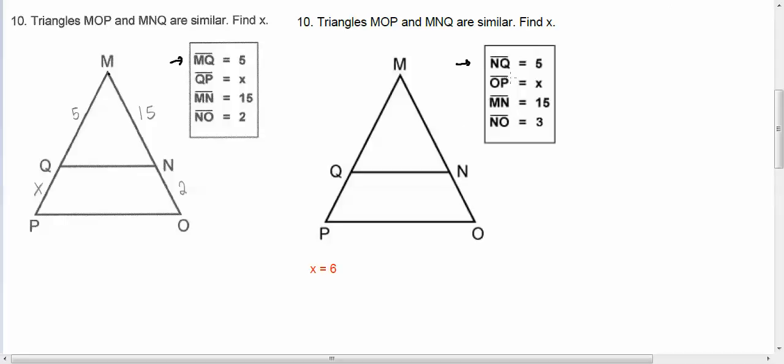If we were to accurately label yours, it would be MN is 15, this guy's 15, and Q, which would be this thing, is 5, and NO is 3, and OP is X. And the correct answer for this problem right here is 6. I agree with you on that.